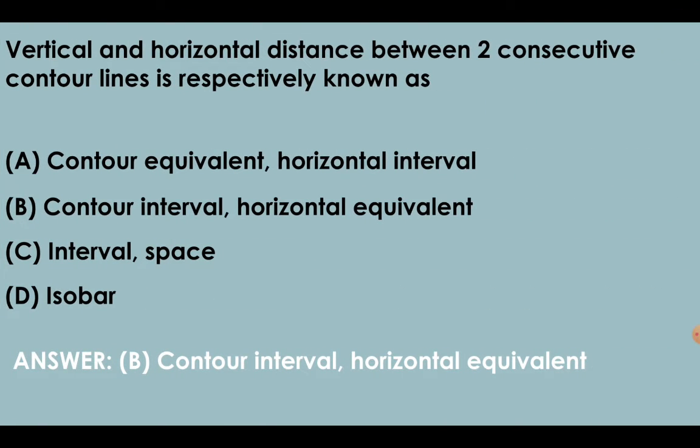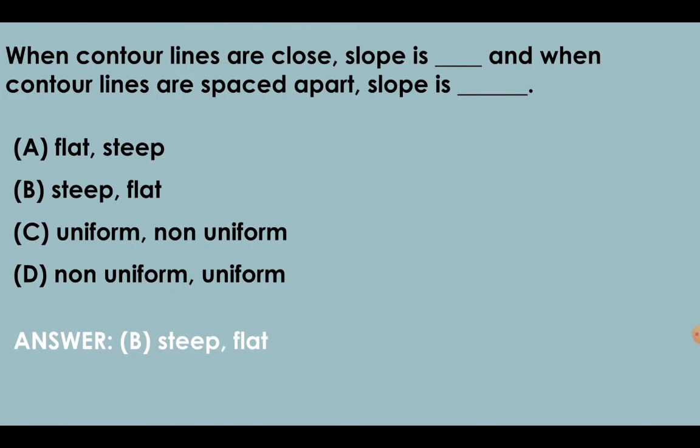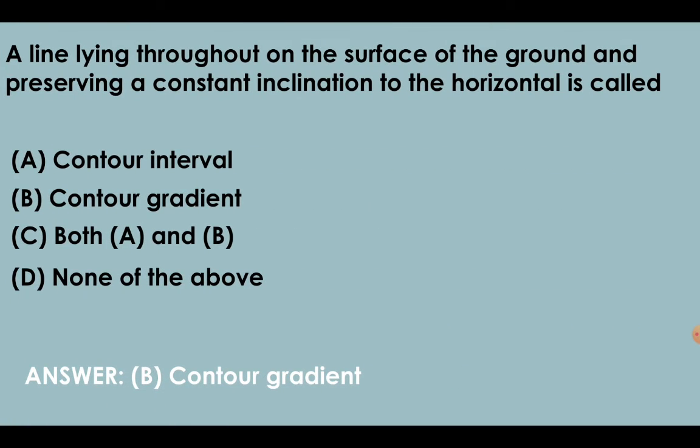Vertical and horizontal distance between two consecutive contour lines is respectively known as contour interval and horizontal equivalent. In a closed contour, when lower values are inside and higher values are outside, it indicates a depression. When contour lines are closed, slope is steep, and when contour lines are spaced apart, the slope is flat or gentle. Only in the case of an overhanging cliff do contour lines intersect each other.